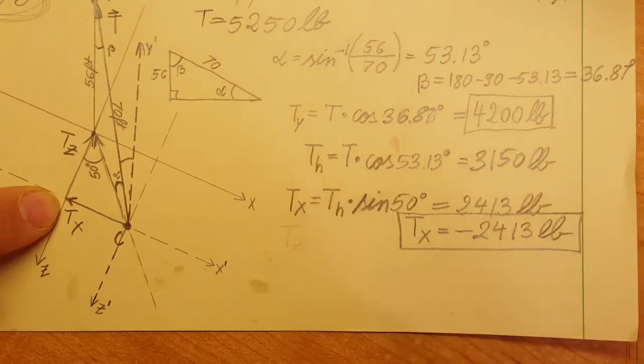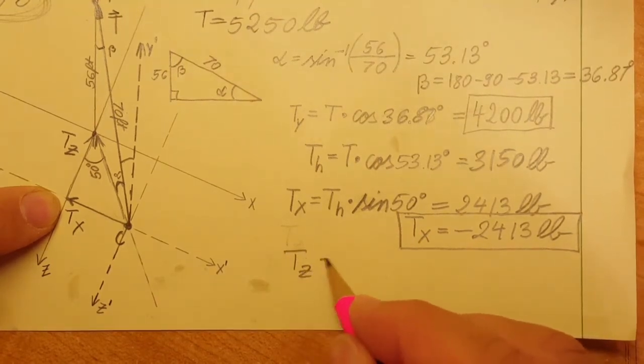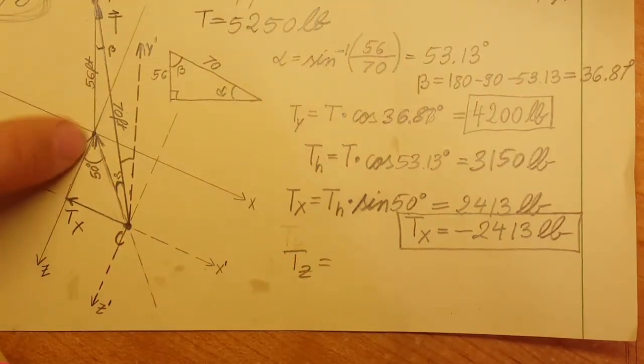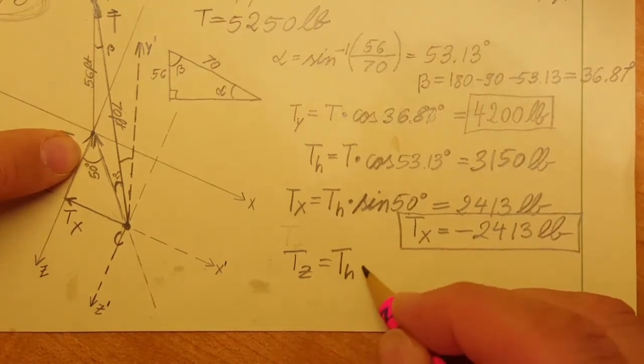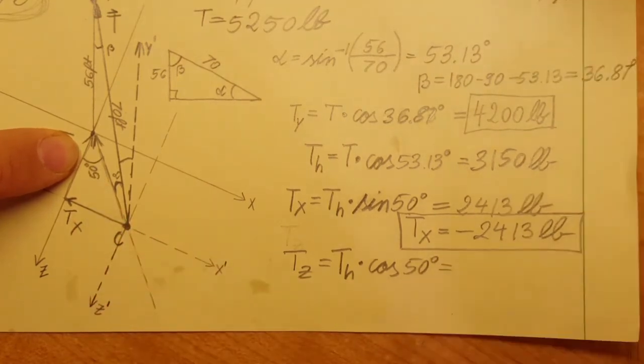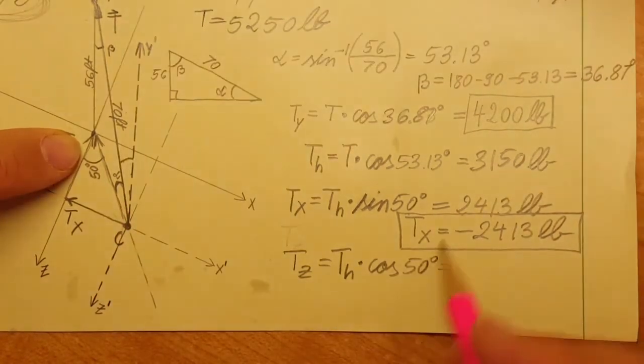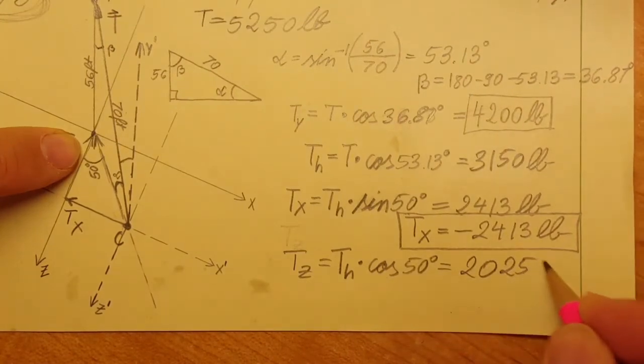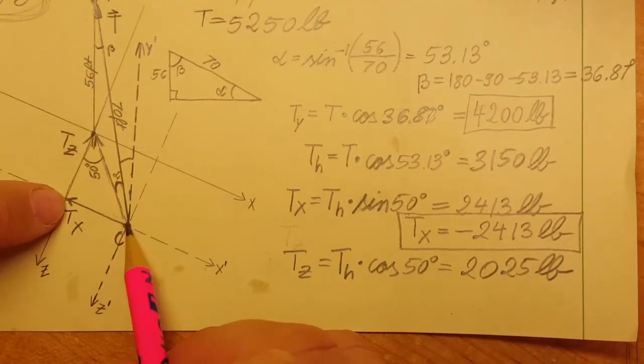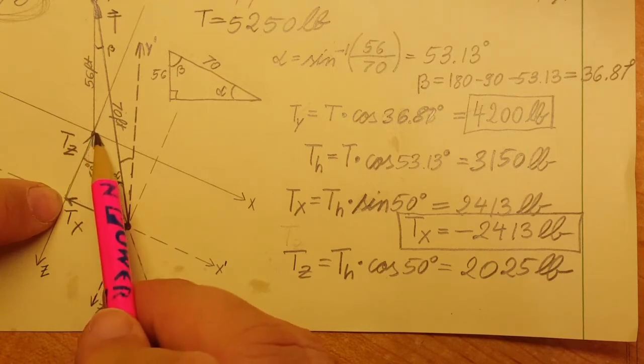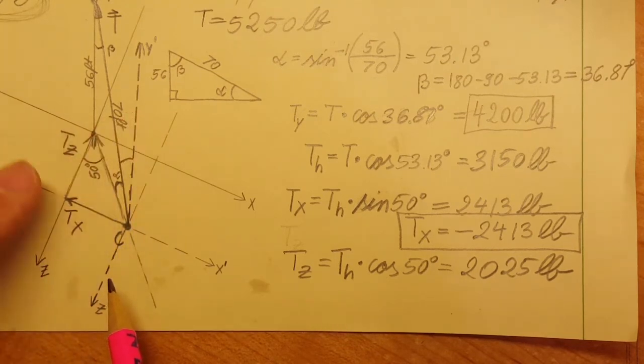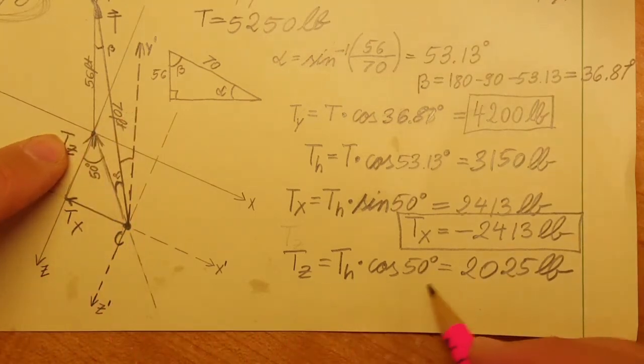For T_z, we're going to use the same triangle but now we're going to use T_h times cosine of that 50 degree angle, which gives us 2025 pounds. Looking at our origin, this one is pointing toward negative z, so T_z equals negative 2025 pounds.